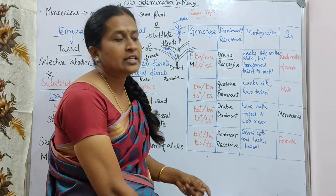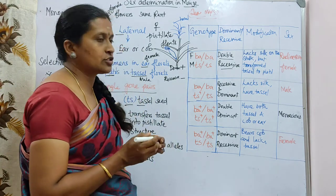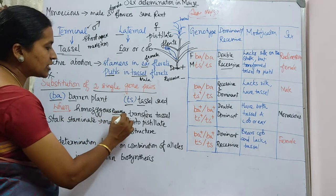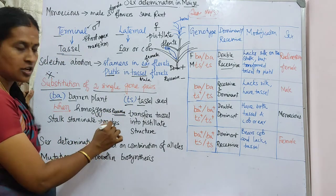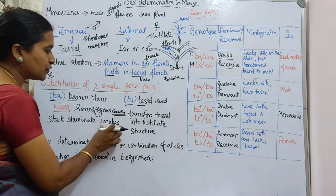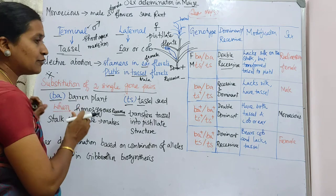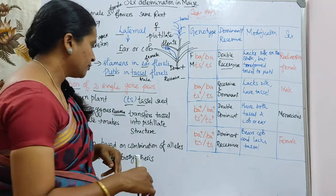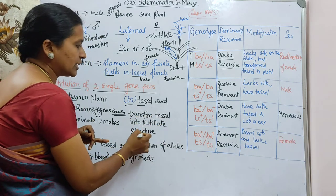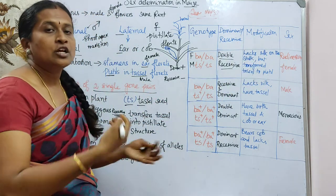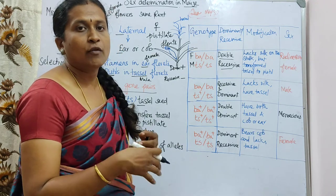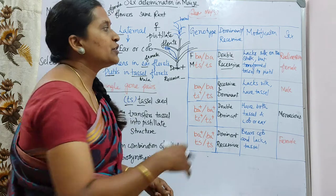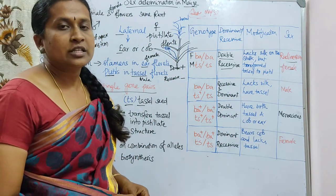This is called a rudimentary female — rudimentary meaning inadequate or of very low expression. In the homozygous recessive condition, the staminate structures try to support female expression, effectively transferring the tassel into a pistillate structure. However, neither male nor female is expressed completely, giving us the rudimentary female condition.